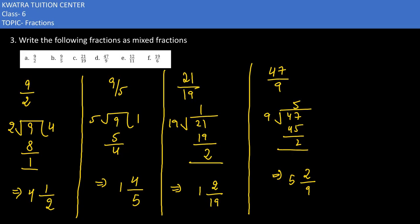5 is here, so it's 5 2/9. Now our questions are E and F, so you need to answer them in the comment section.